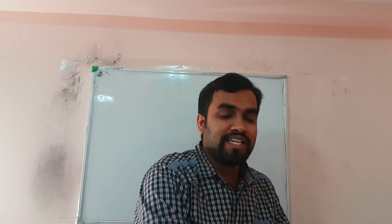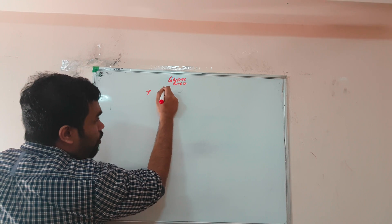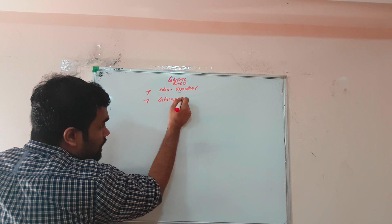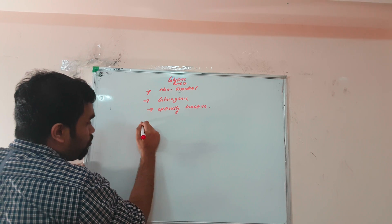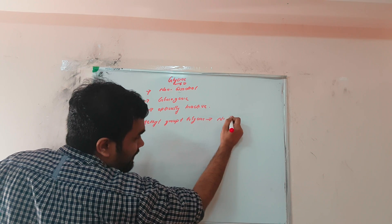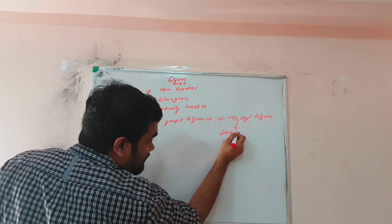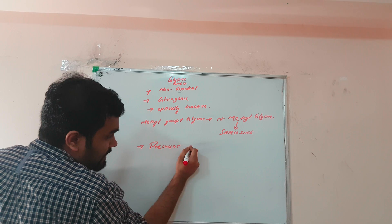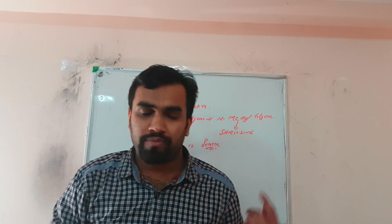The next amino acid we are going to study is glycine. We have already studied that glycine is the simplest amino acid, it is not essential, it is glucogenic, and it is optically inactive because there is no chiral carbon. Methyl group plus glycine gives N-methyl glycine, also known as sarcosine. The precursor of glycine is serine.